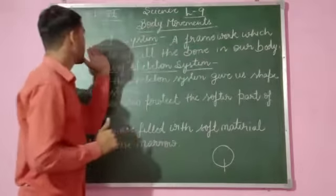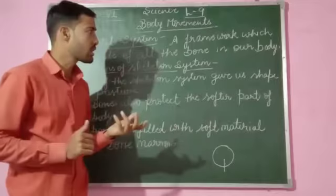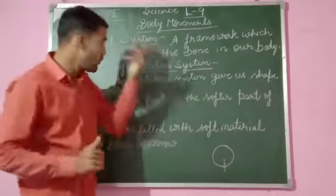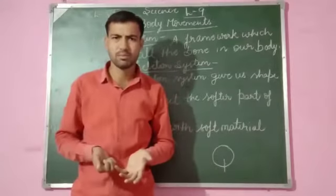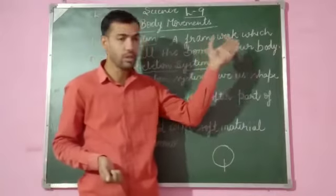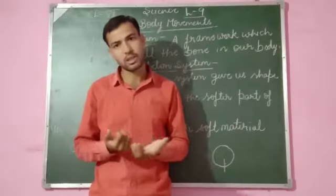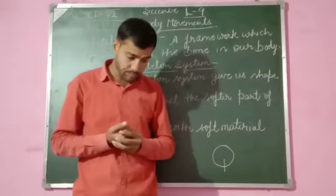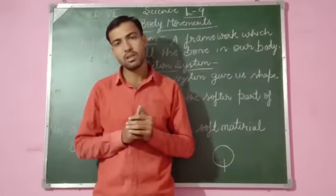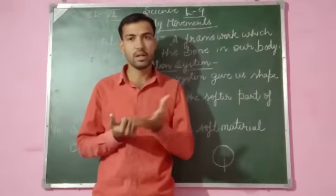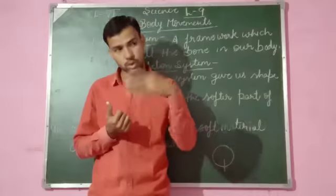Now, in the skeletal system — the framework which is made up of all the bones in our bodies is called the skeleton system. Our adult skeleton system is made up of 206 bones, while each child has 300 or more than 300 bones.